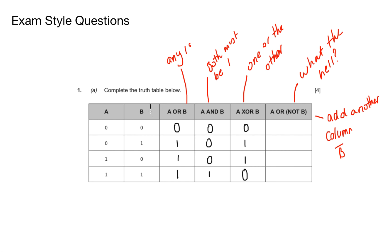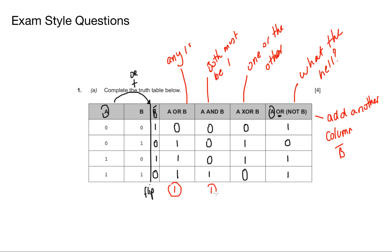I'm going to add another column because I know I can flip B. Then I can do the rest — I've just got to OR the A column with the NOT B column. Flipping B gives me 1, 0, 1, 0. And ORing A with NOT B gives me 1, 0, 1, 1. And that's 4 marks: one mark for A or B, one mark for A and B, one mark for A XOR B, and one mark for the final column, A or NOT B. Easy peasy.